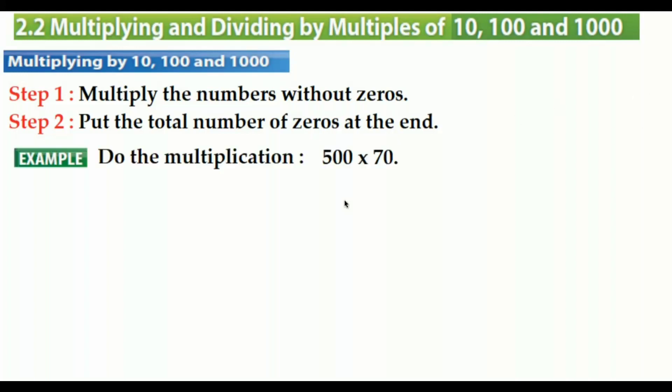Let's see an example. Do the multiplication: 500 times 70. First of all, what was step one? Multiply the numbers without zero. Let's see the numbers without zero. We have 5 and 7. First of all, we are going to multiply 5 by 7, which is 35.